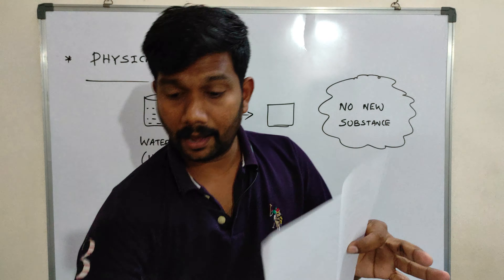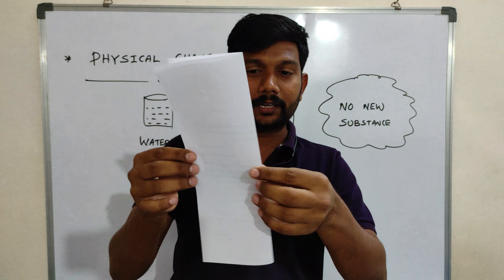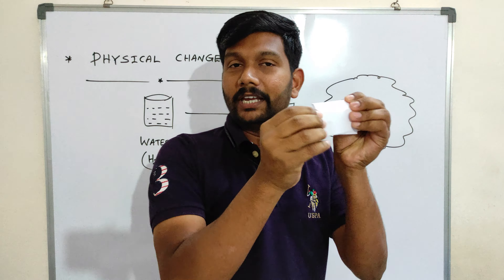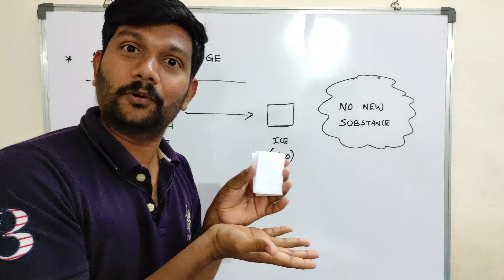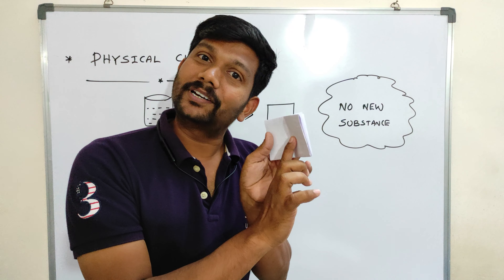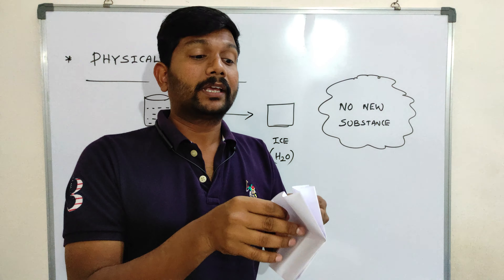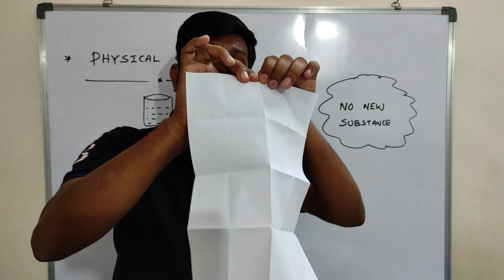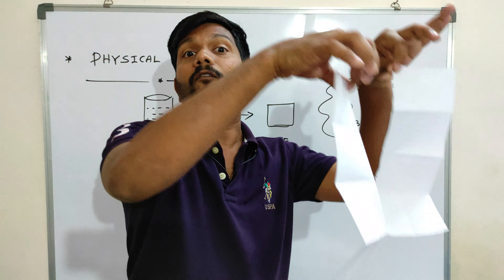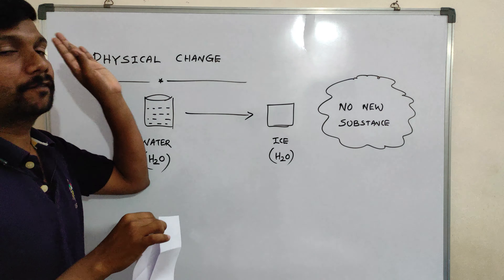One more example: I have a sheet of paper — a big paper. What do I do? I fold it once, second time, third time, or fourth time. Now you can see the size is small. A change happened when I folded the paper. But what new material was formed? None. So folding the paper is an example of physical change. Even if you are tearing the paper — if you cut the paper, that is also an example of physical change. Before cutting and after cutting, both are the same material. There is no new substance formed. So this is an example of physical change.